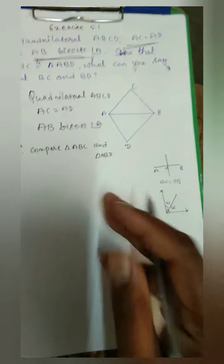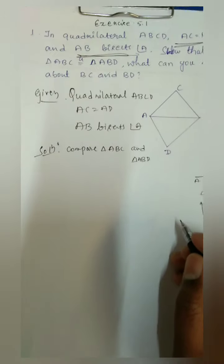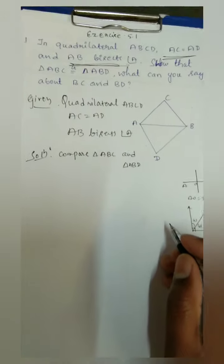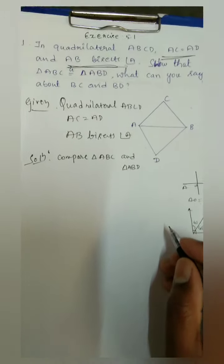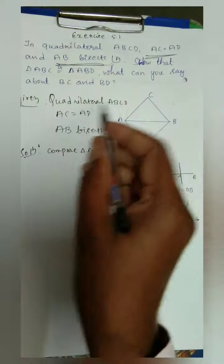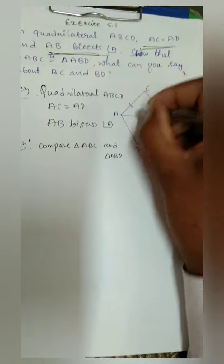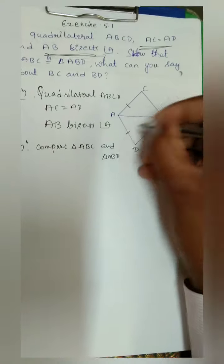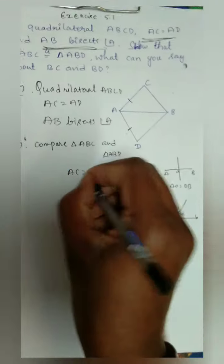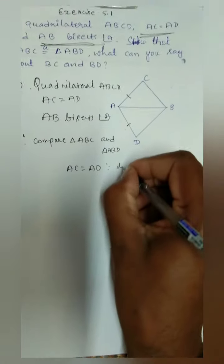For congruence rules, any three elements must be equal. Observe the given data for quadrilateral ABCD: AC is equal to AD — this is given. So AC corresponding to AD are equal sides.